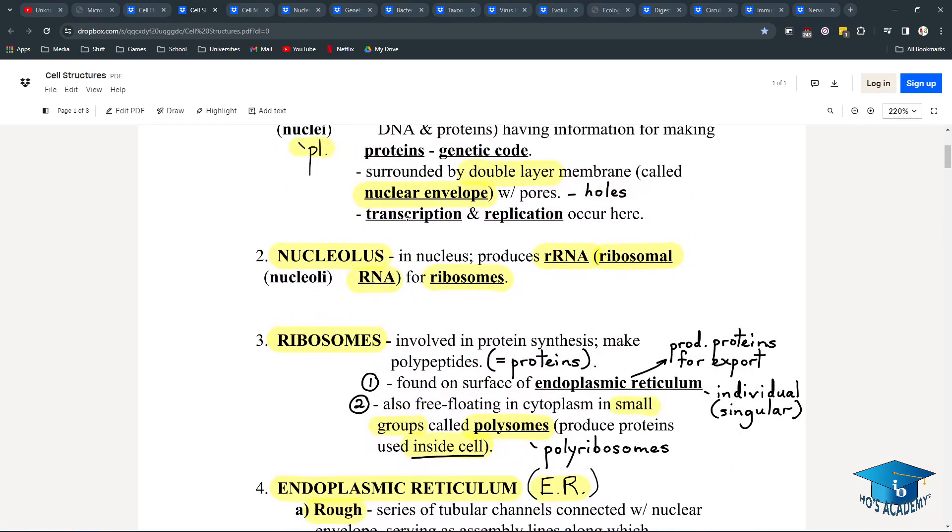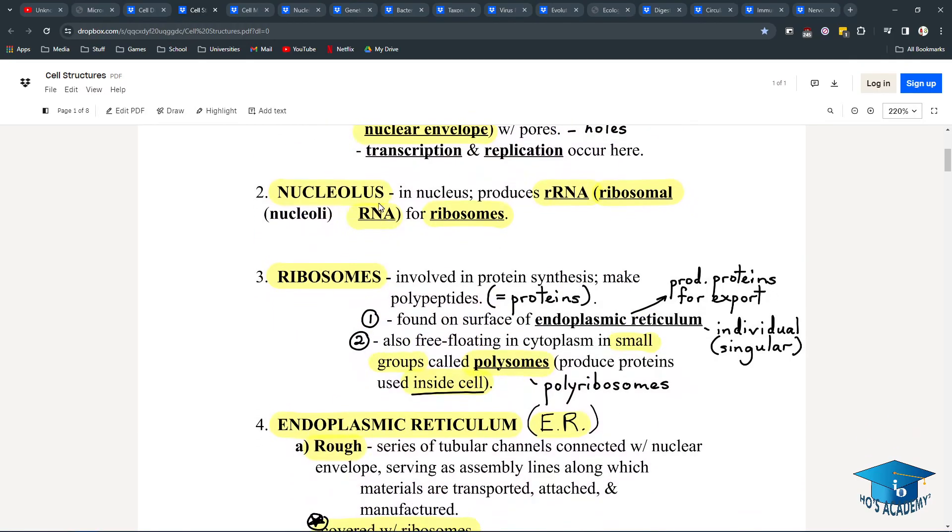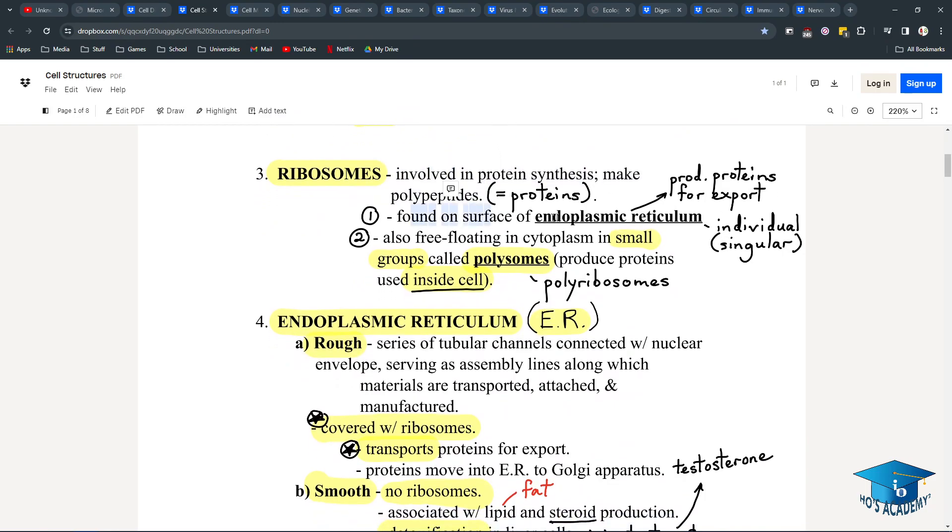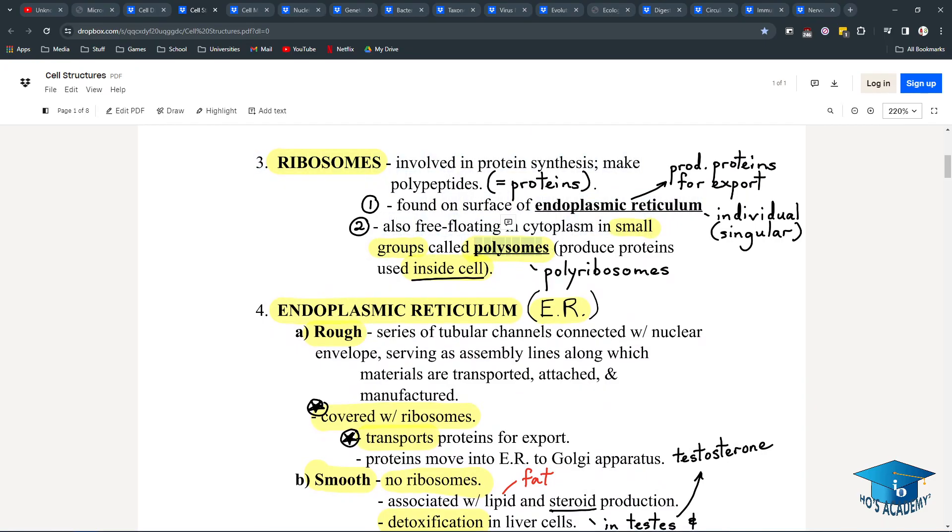The nucleolus is within the nucleus and produces rRNA, ribosomal RNA for ribosomes. Ribosomes are involved in protein synthesis and make polypeptides, which are just proteins. They're found either on the surface of the rough ER or they're in small groups called polysomes. Polysomes are able to process multiple mRNA sequences at once. The ones in the cytoplasm are used inside the cell, whereas the ones in the endoplasmic reticulum are for export.